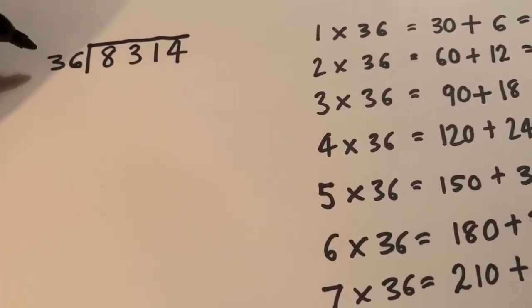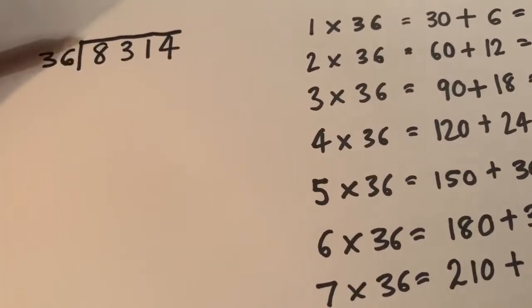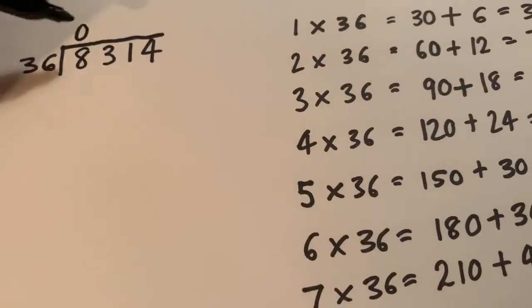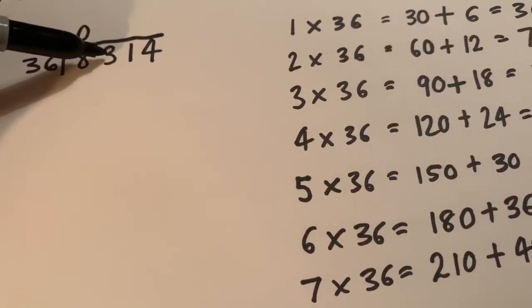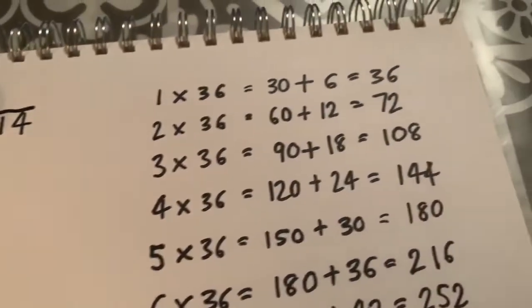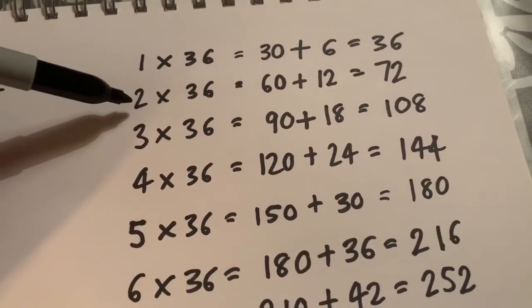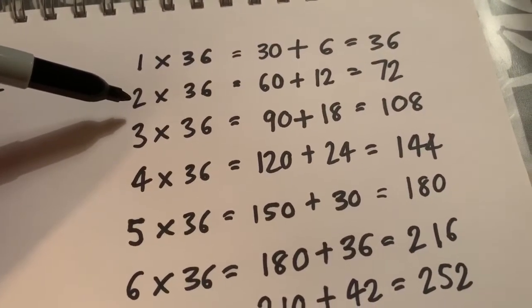Okay, let's have a go at tackling this long division then now. 36 into 8 can't be done, so it goes in 0 times. So I now need to consider the 8 and the 3 together as 83. How many 36s in 83? Well, I can fit two 36s into 83.